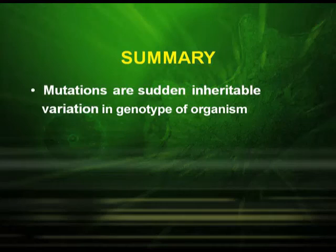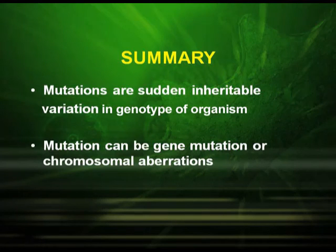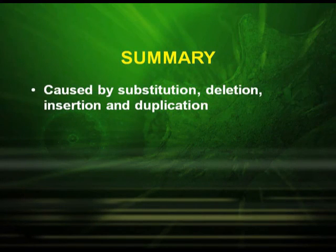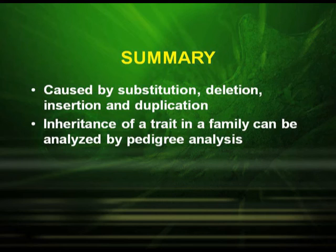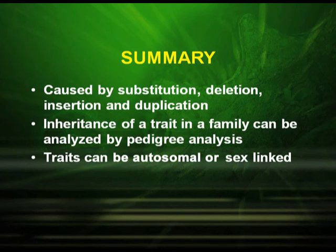Now let us summarize our topics. Mutations are sudden inheritable variations in the genotype of an organism. Mutation can be gene mutation or chromosomal aberrations or disorders. It is caused by substitution, deletion, insertion, and duplication. Inheritance of a trait in a family can be analyzed by pedigree analysis, and traits can be autosomal or sex-linked.